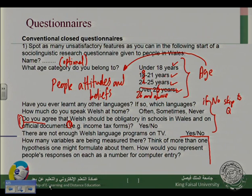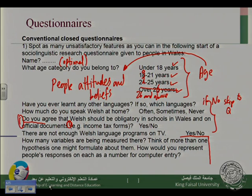So it is very important that we know the difference between the dependent and independent variable. We answered: how many variables are being measured? We can see here one independent and one dependent variable. Think of more than one hypothesis one might formulate about them.